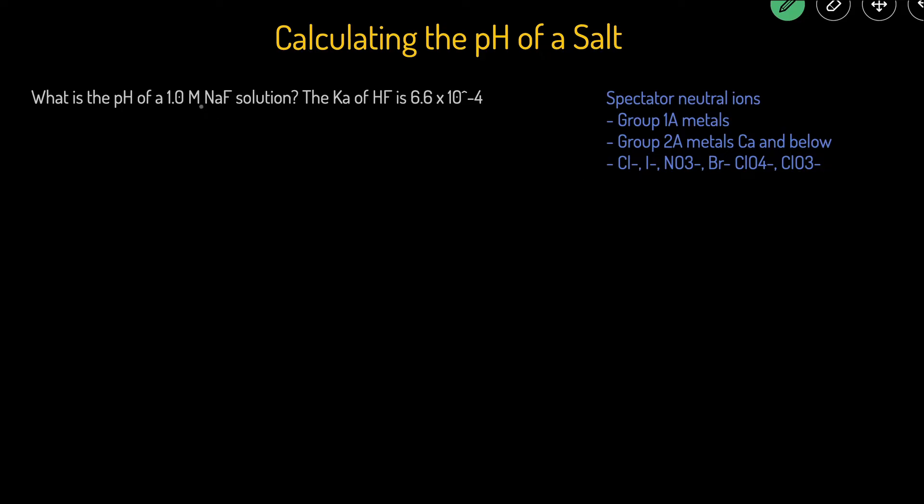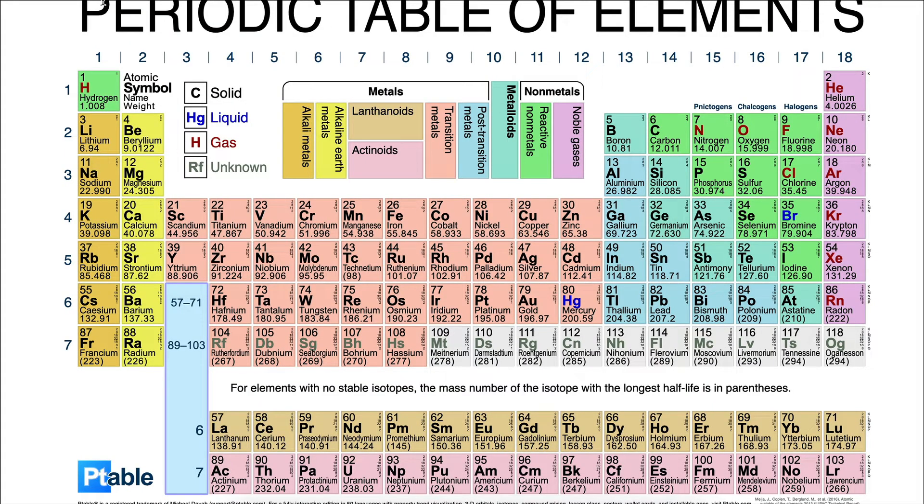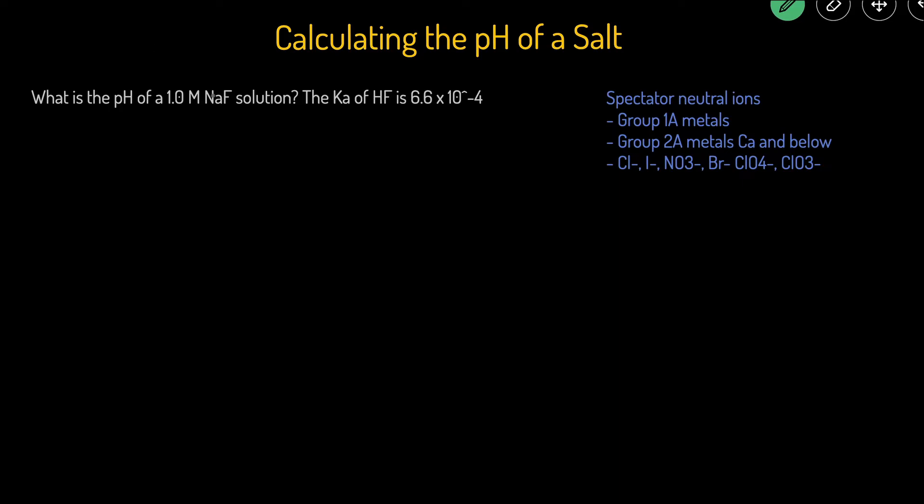So we will cross out the Na because Na is in group 1A. As you can see right here, Na is in the first group. So we'll cross out Na.